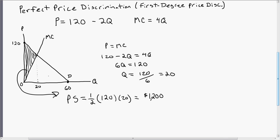So that is producer surplus under first-degree price discrimination, or when a firm practices perfect price discrimination. Notice in this case that there is no consumer surplus. Consumer surplus is 0.